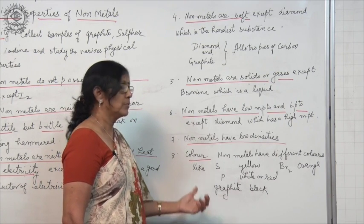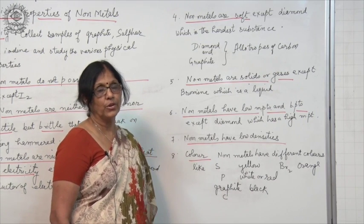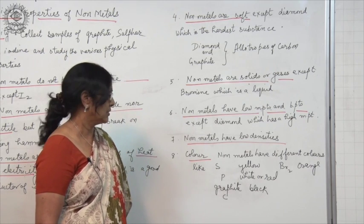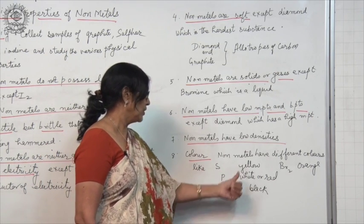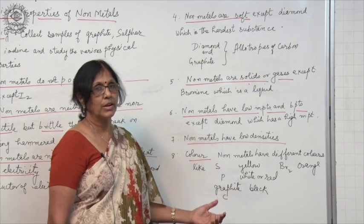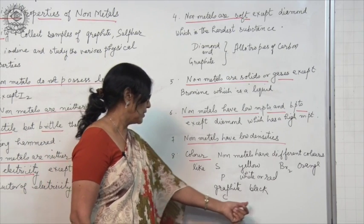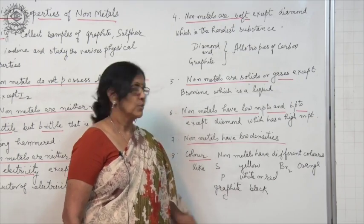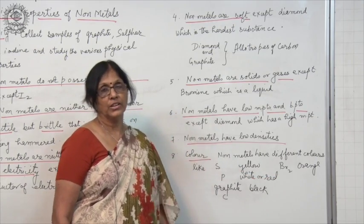The colour also varies in the case of non-metals. They have different colours. Sulphur is yellow in colour, phosphorus is white colour or red colour also. Graphite is black in colour, bromine is orange or red colour.